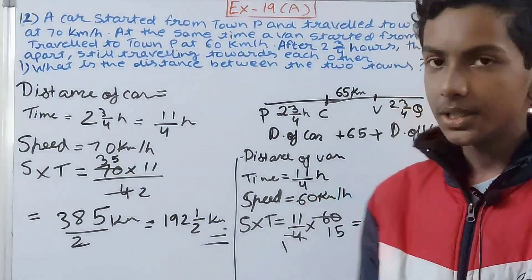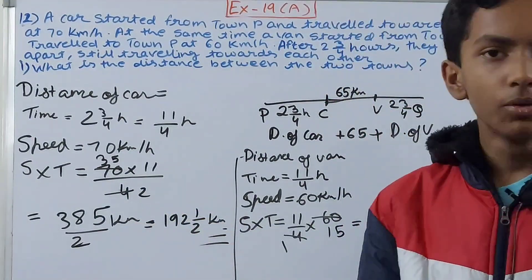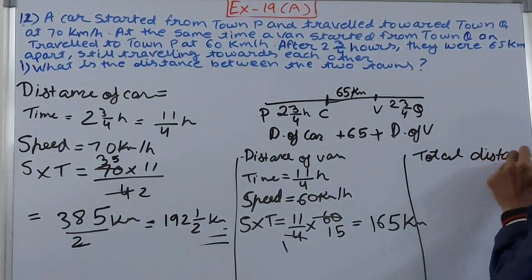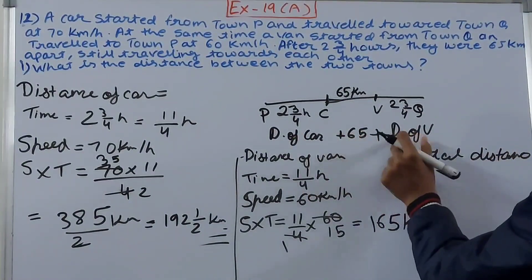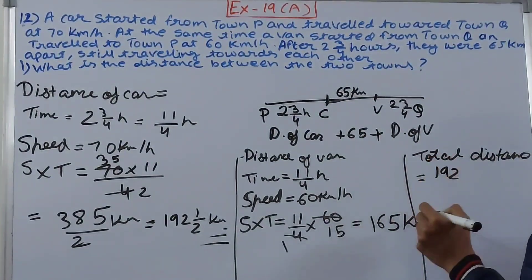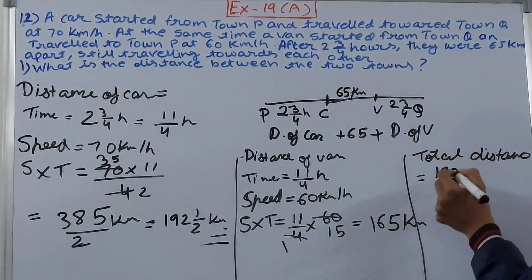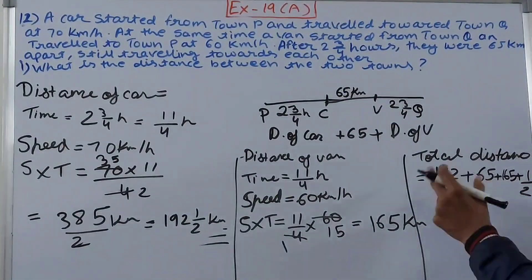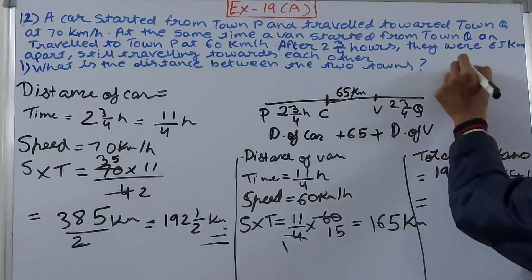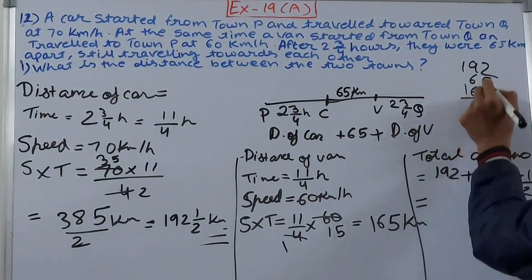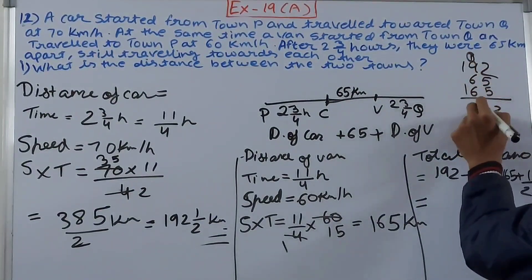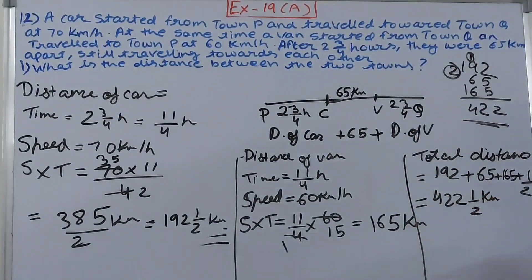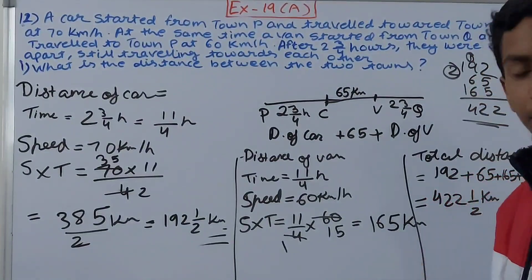Now we calculate the total distance. Total distance = distance of car + 65 km + distance of van = 192½ + 65 + 165. Adding the whole numbers: 192 + 65 + 165 = 422, plus the ½, giving us 422½ kilometers. This is the total distance between town P and town Q.